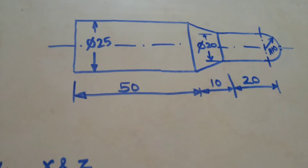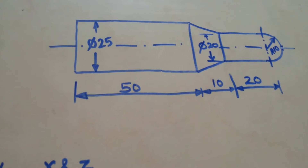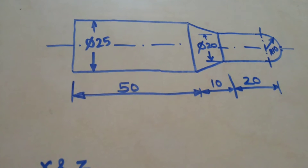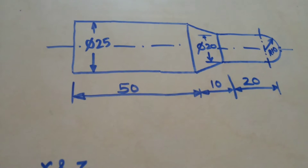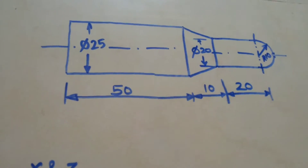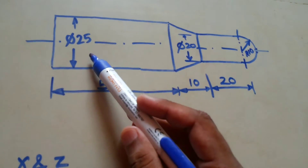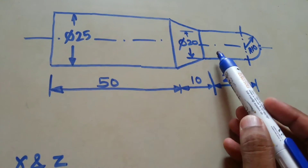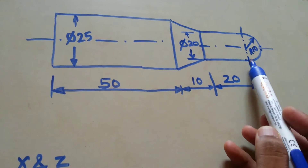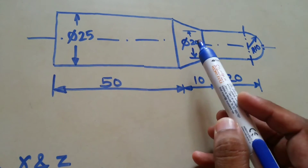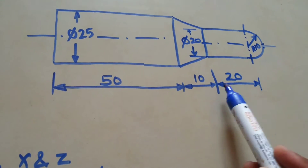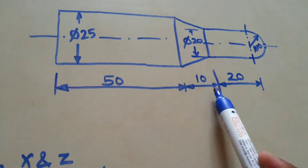Today's topic is a part program to machine a workpiece on a CNC lathe machine. This question was asked in Winter 14. As you can see, this diameter is 25, this diameter is 20, and this radius is 10. The straight portion is 20, the tapered portion is 10, and the straight portion is 50.